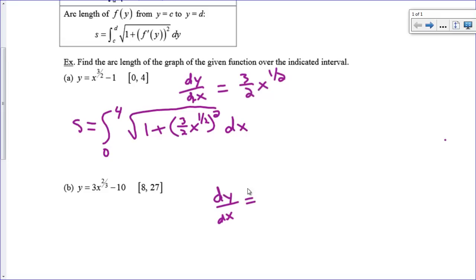So your derivative here, bring the 2/3 down, the 3's are going to cancel, and we're going to get 2x to the negative 1/3 power. That's your first step, just find the derivative.